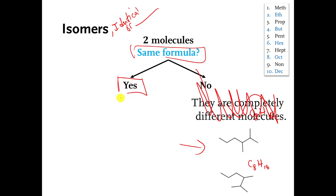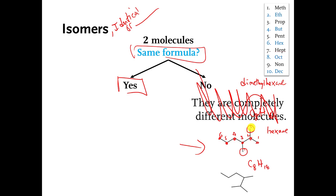The second question is: do they have the same name? We have to name these molecules. We count the longest chain of carbons — that's 6, so the name ends in hexane. We number in this direction. There are two methyl side chains, so it is dimethylhexane. The methyls are at carbon 2 and carbon 3, so that top molecule's name is 2,3-dimethylhexane.